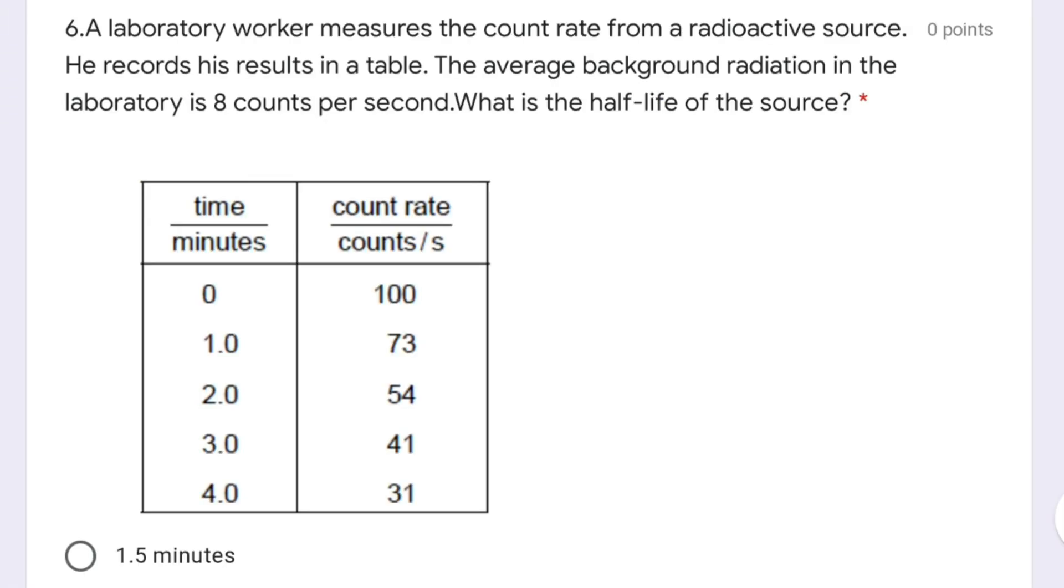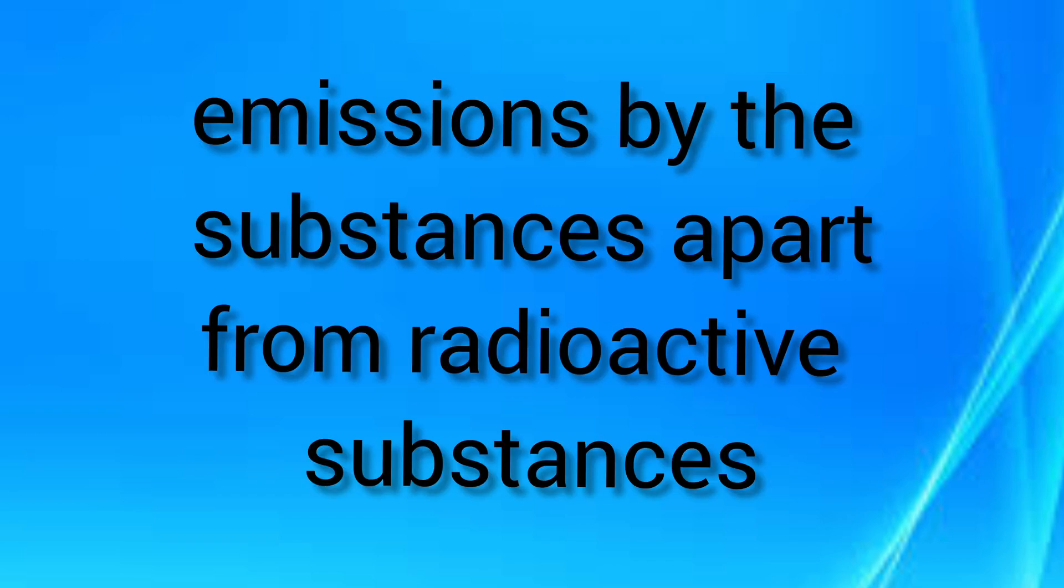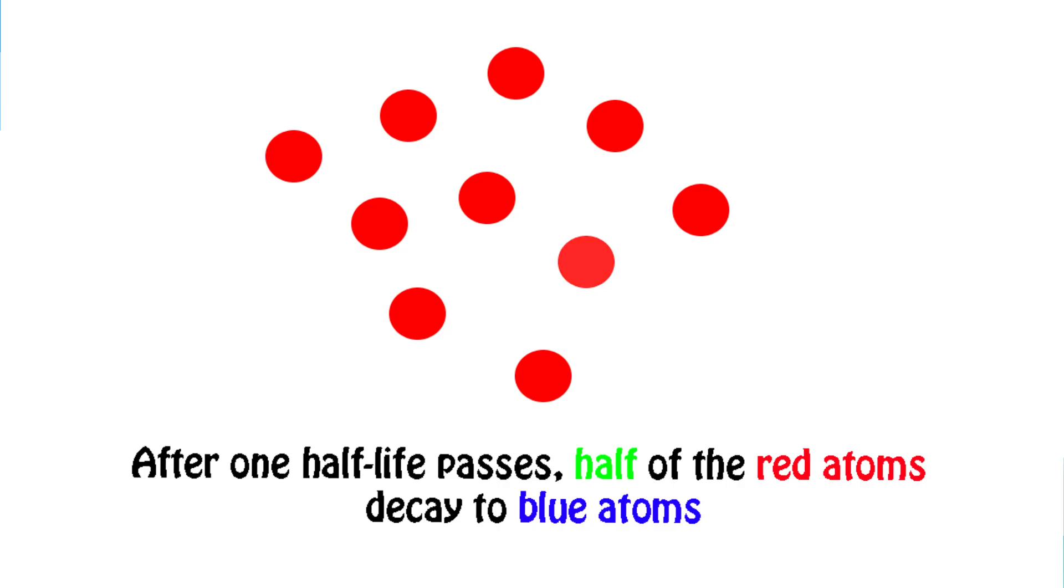Question 6 is related to half-life of a source. A laboratory worker measures the count rate from a radioactive source and records his results in a table. The average background radiation in the laboratory is 8 counts per second. What is the half-life of the source? Before answering, I'll explain what is count rate, background radiation, and half-life. Count rate is the number of emissions in a given time. Background radiation means radiation produced by all other materials apart from radioactive nuclei. Half-life is the duration in which radioactive nuclei reduce their mass to half.